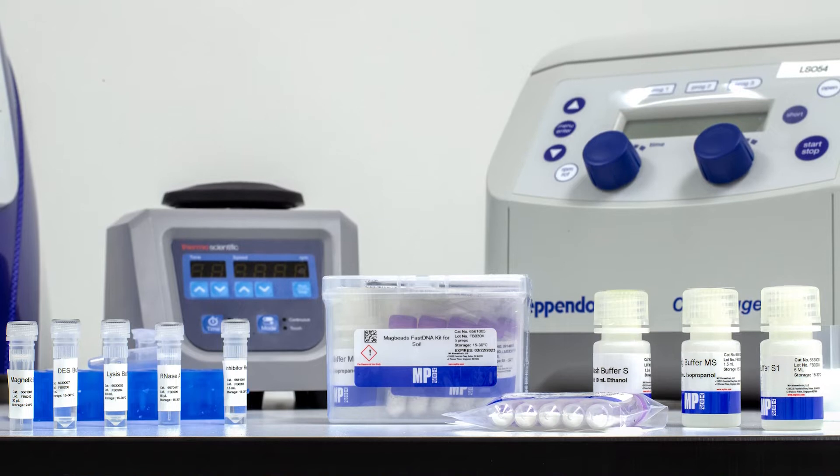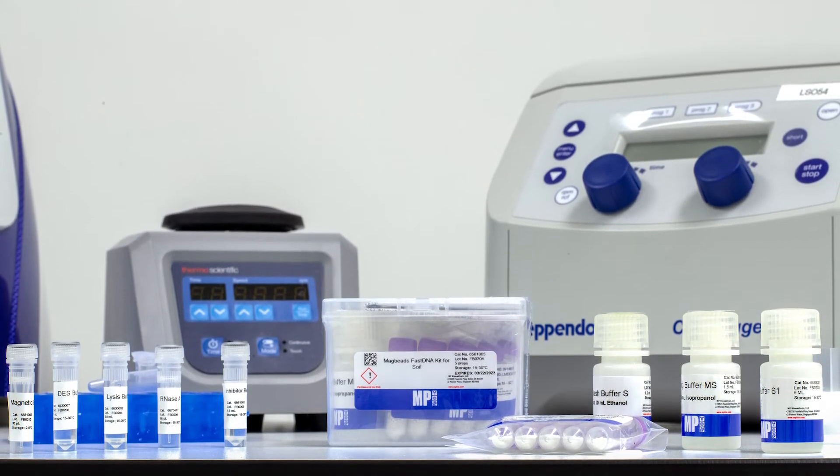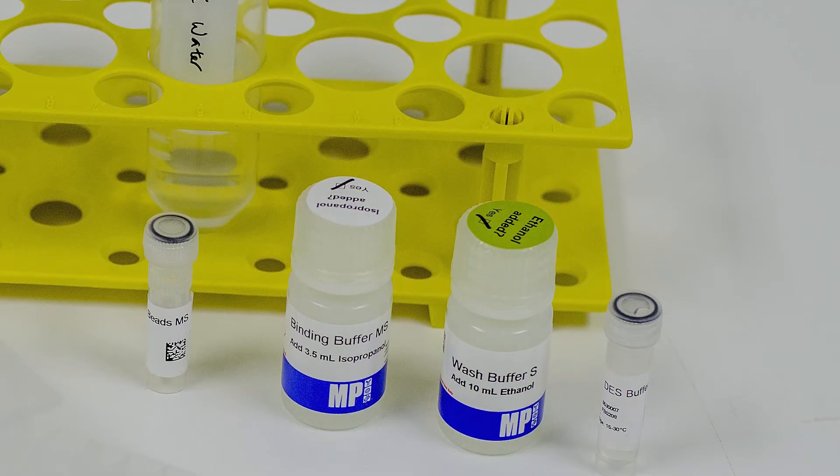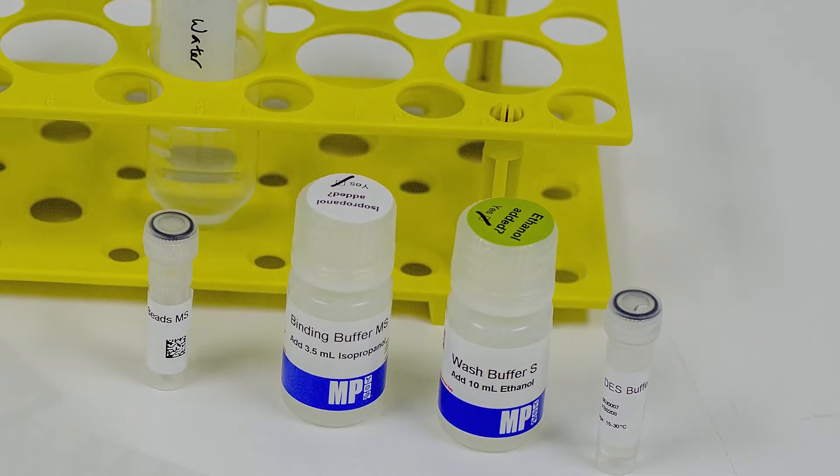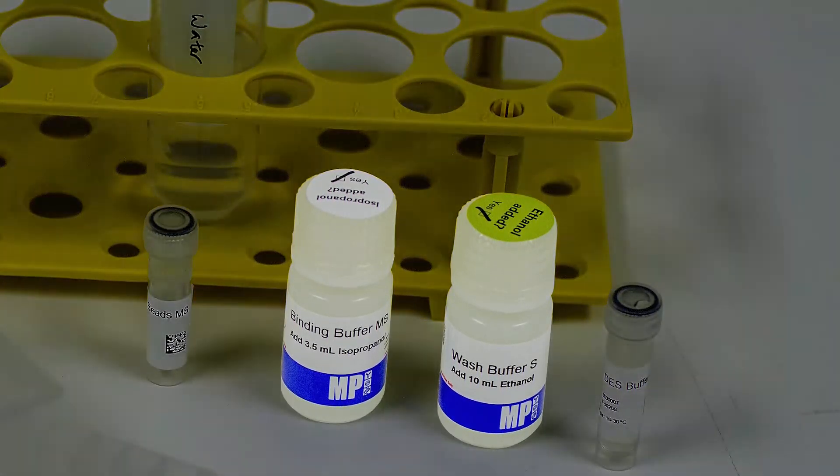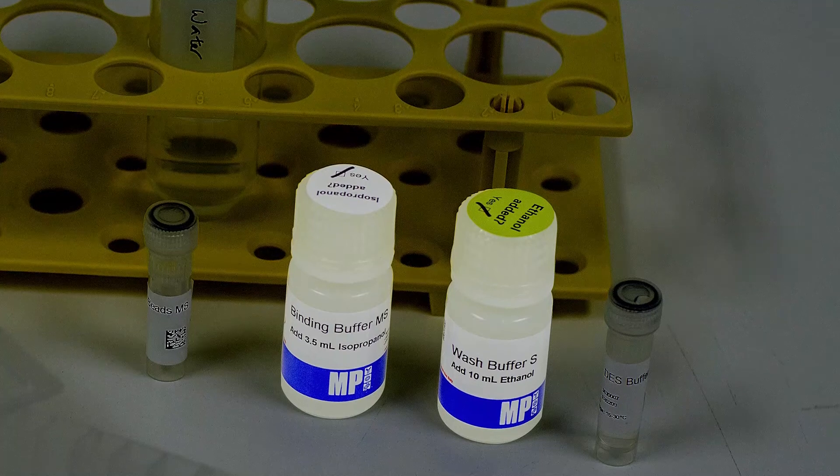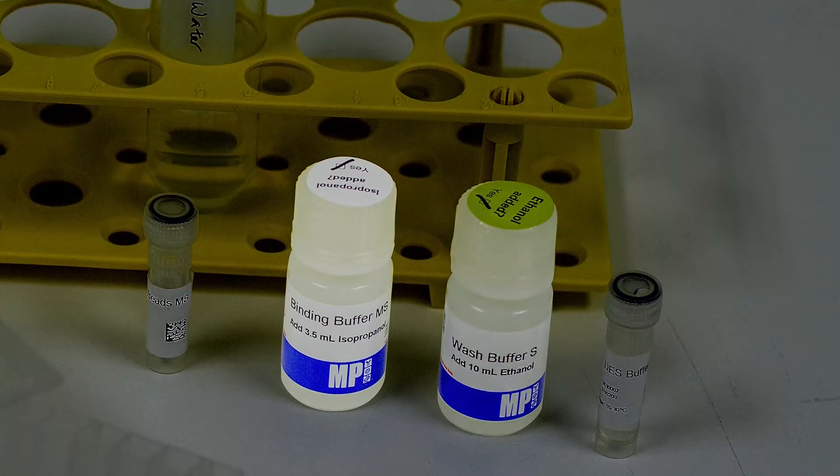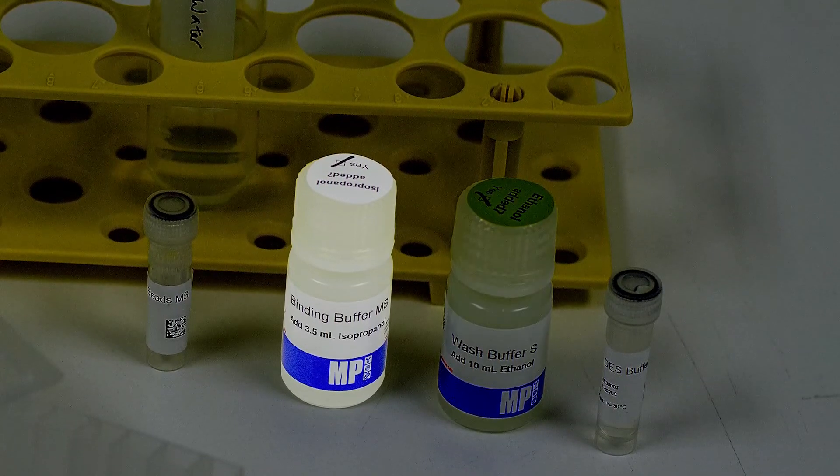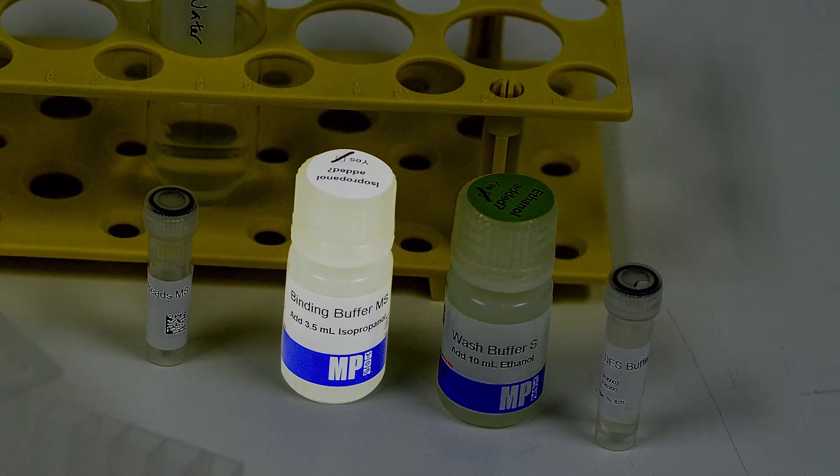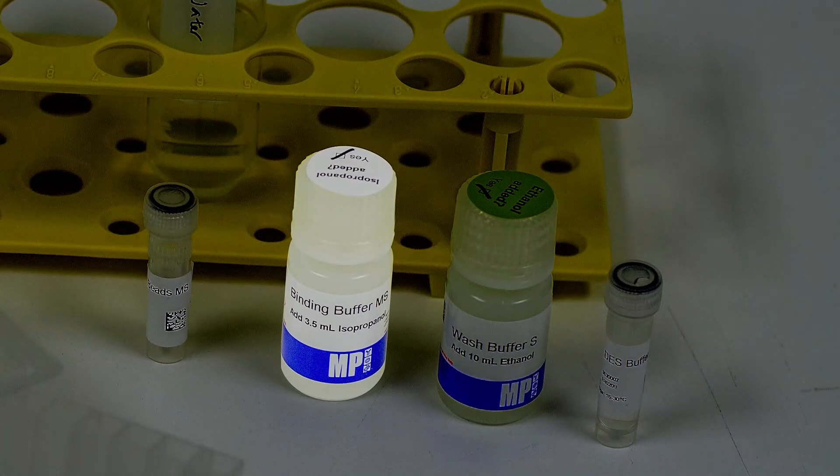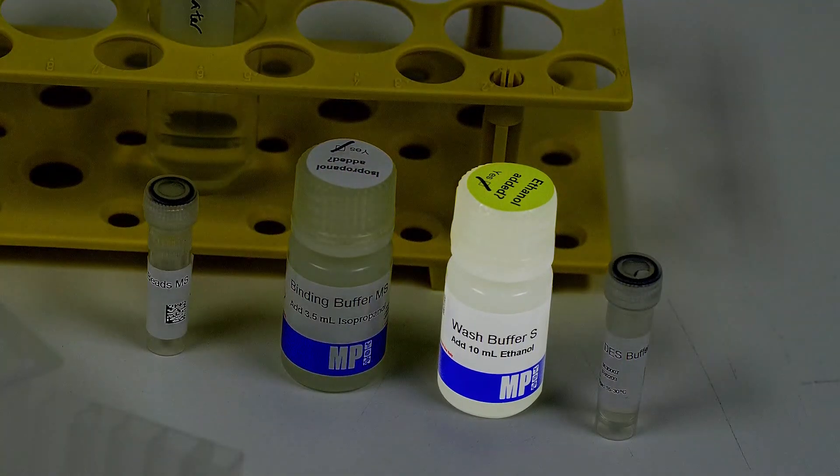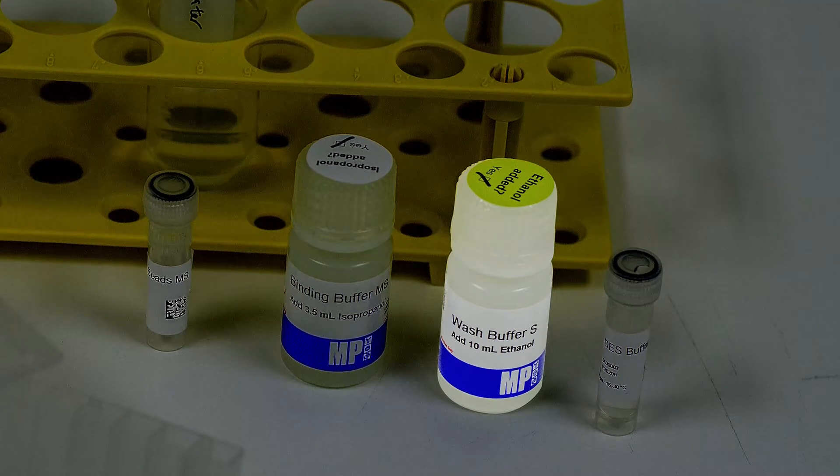For the purpose of this demo video, we will be using the sample kits of MacBits FastDNA Kit for soil. When using the MacBits Kit for the first time, be sure to add the recommended amount of isopropanol and ethanol to binding buffer MS and wash buffer S respectively. For the sample kit, we add 3.5ml of isopropanol into binding buffer MS bottle and mark it. We also add 10ml of 100% ethanol into wash buffer S bottle and mark it.